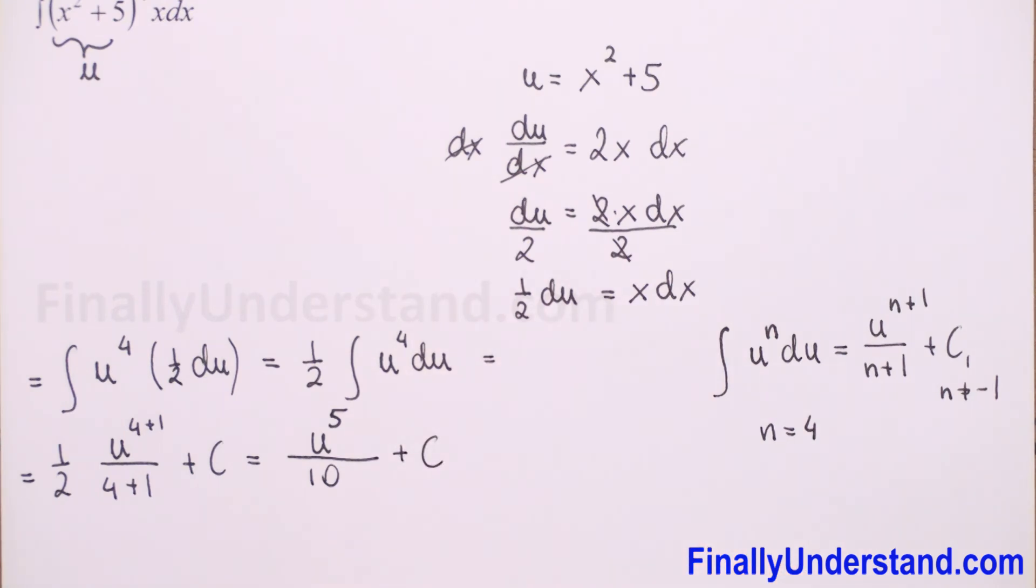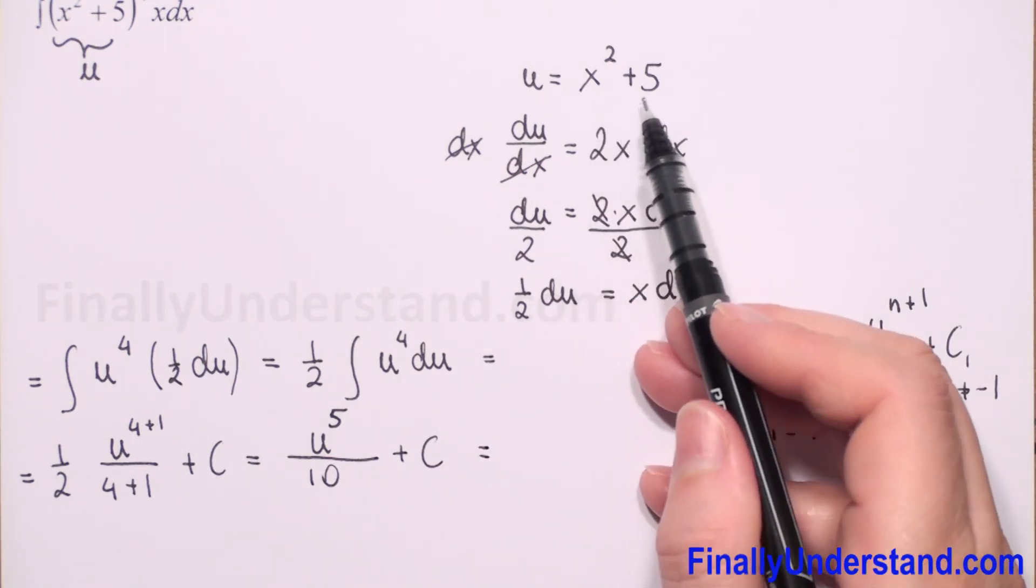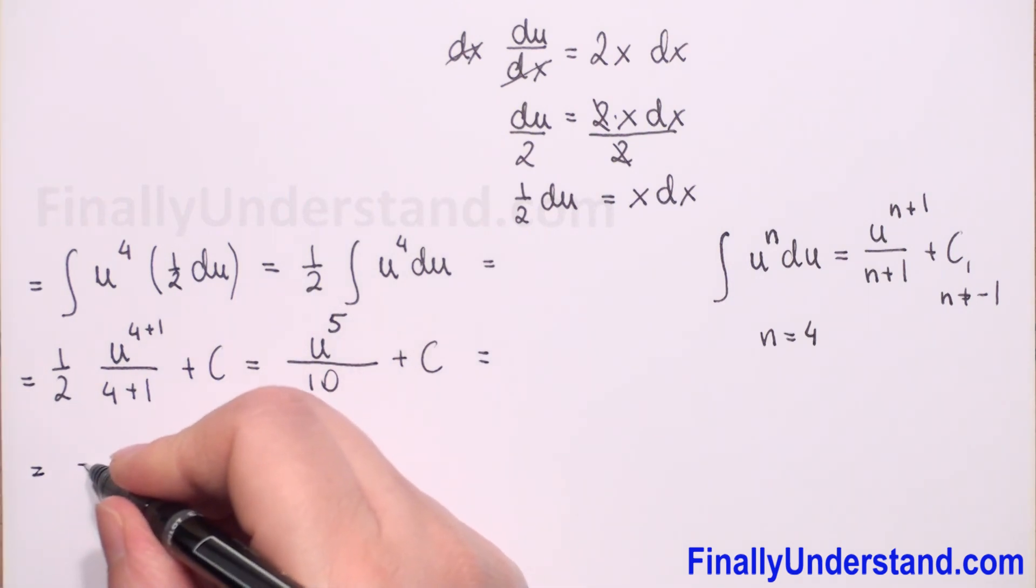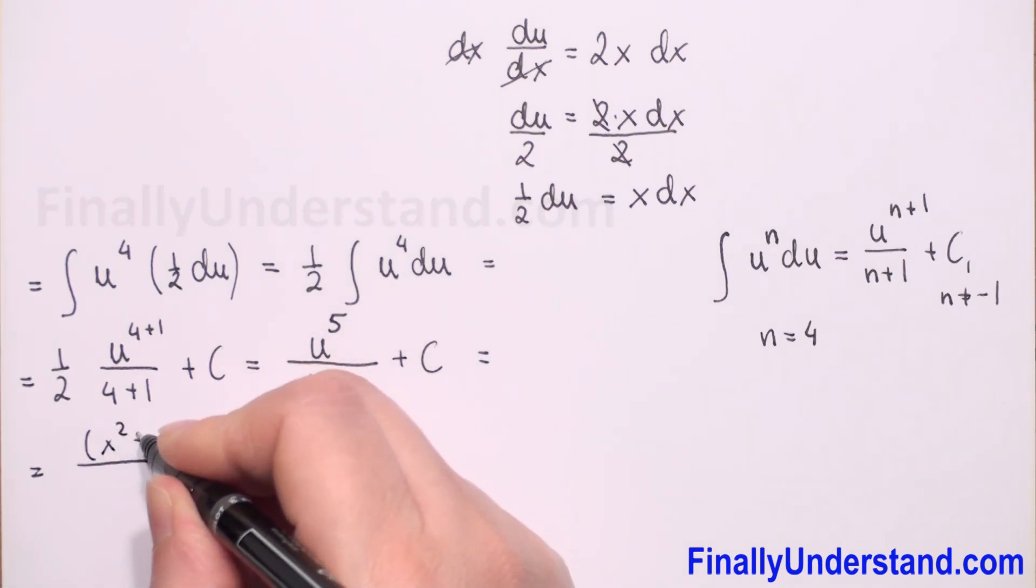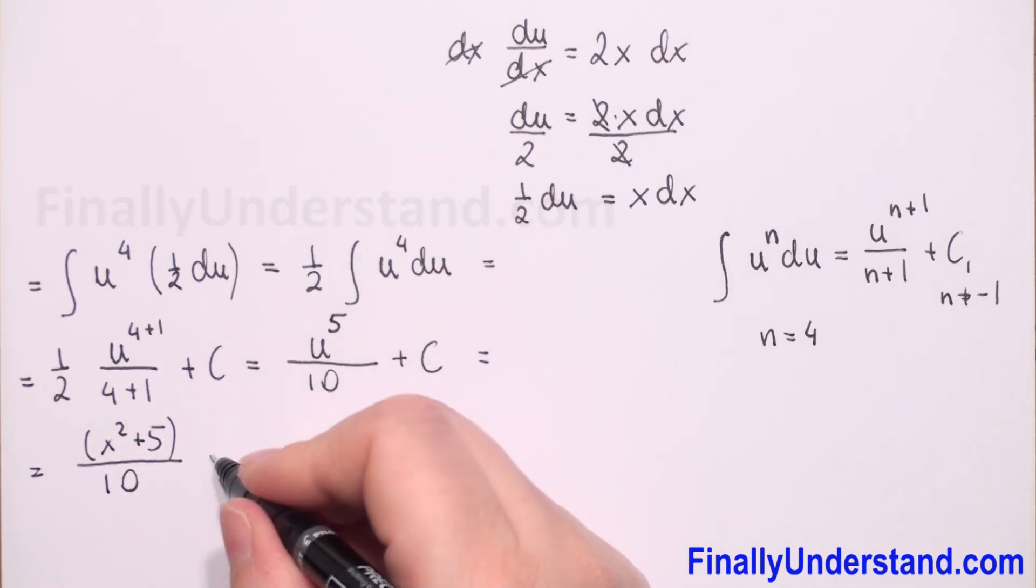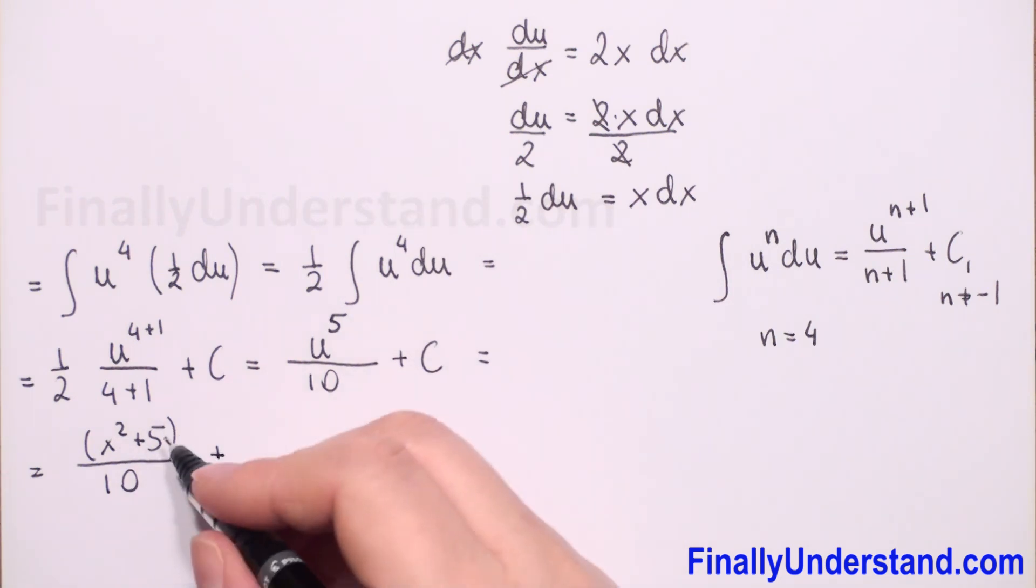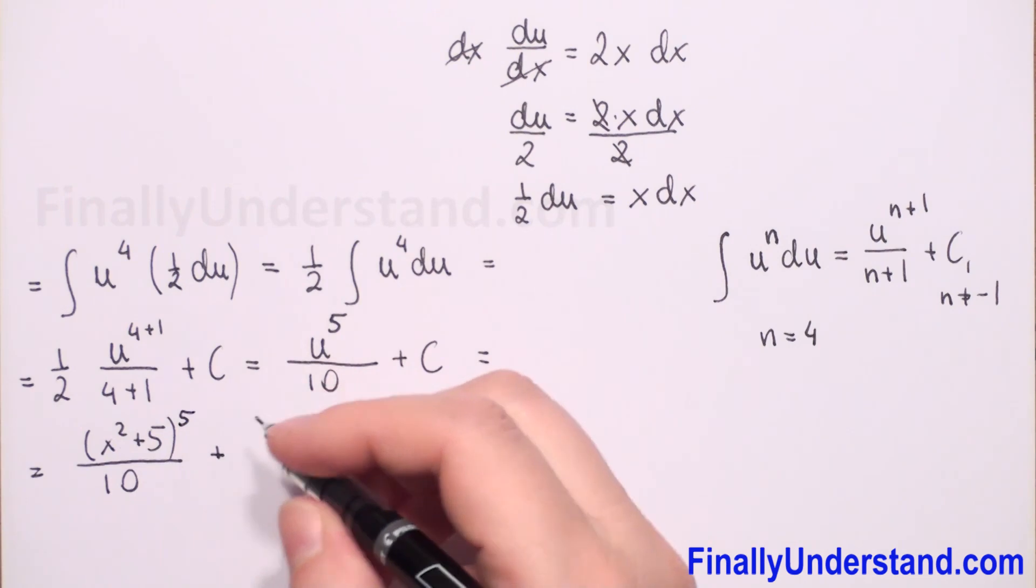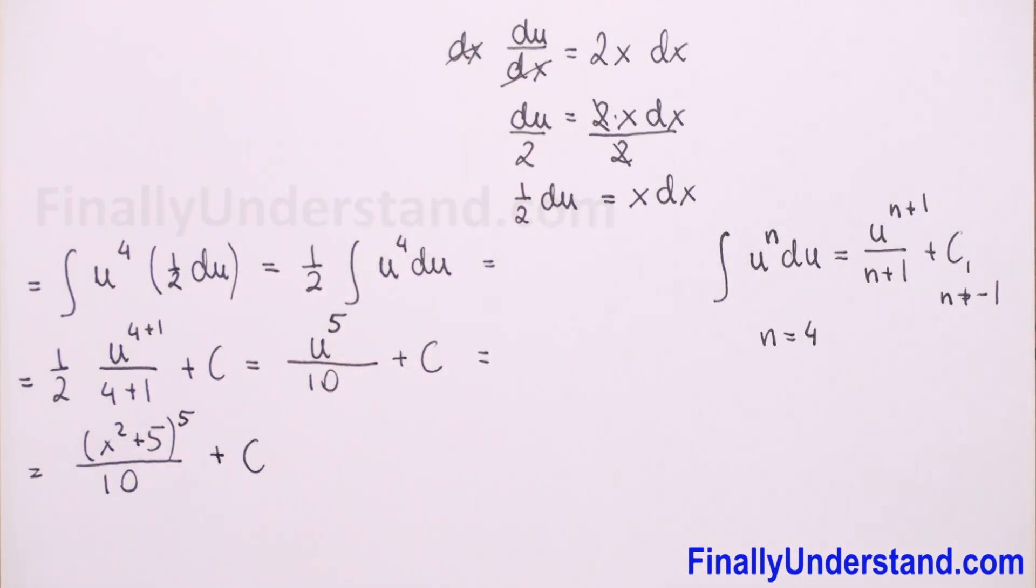Now we have to unsubstitute the u. u is equal to x square plus 5. So this is equal to, in numerator we will have x square plus 5 to the power 5, over 10, plus C. Don't forget the constant. So we are finished.